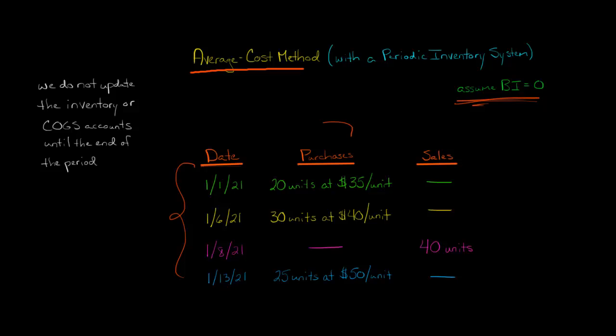They're a retailer, so they make purchases and then resell those items at a markup. So on January 1st, this company buys 20 units at $35 a unit, and then they purchase 30 additional units at $40 a unit five days later. Then on January 8th, they sell 40 units, and then on January 13th, they purchase another 25 units at $50 a unit.